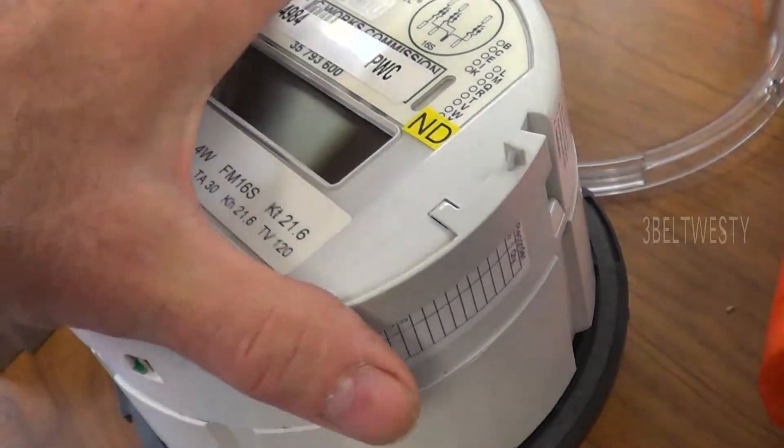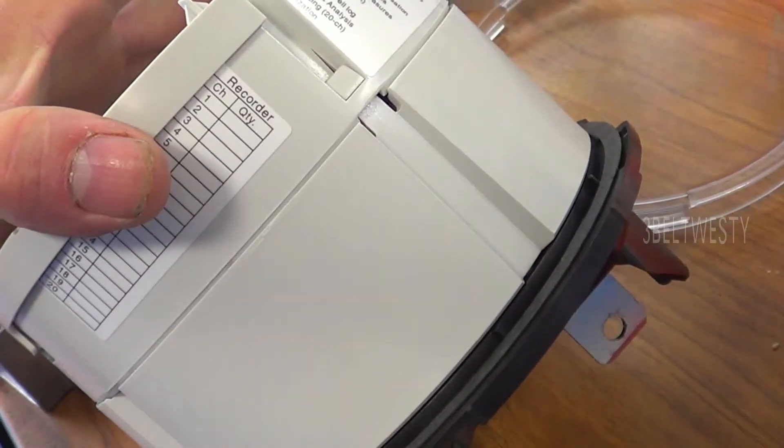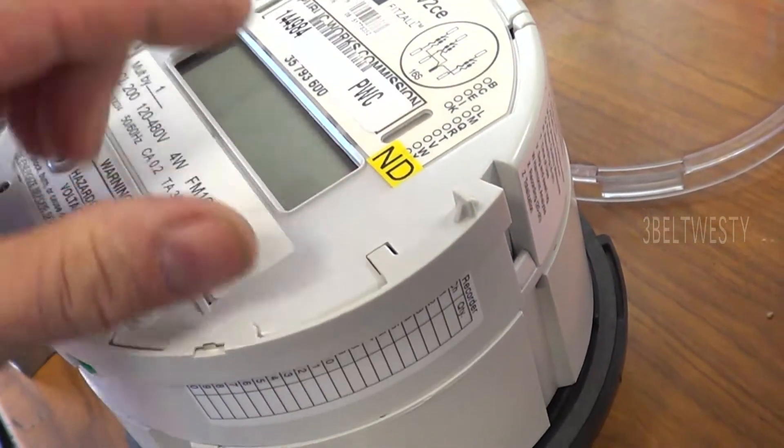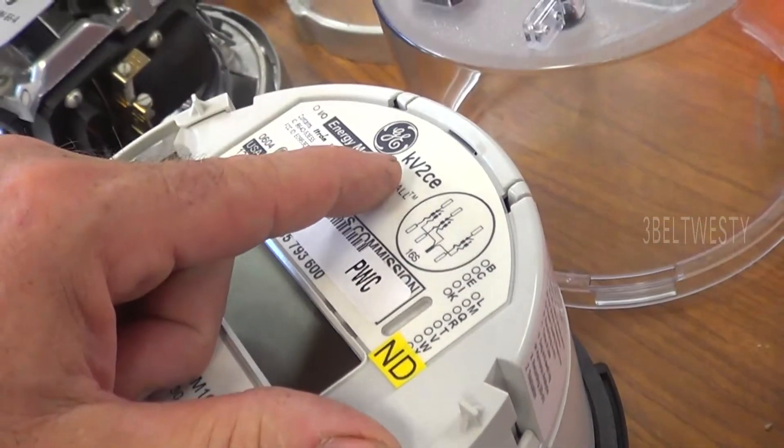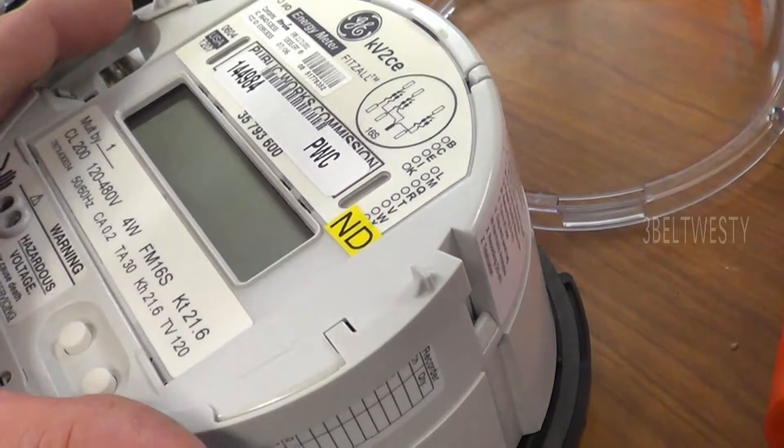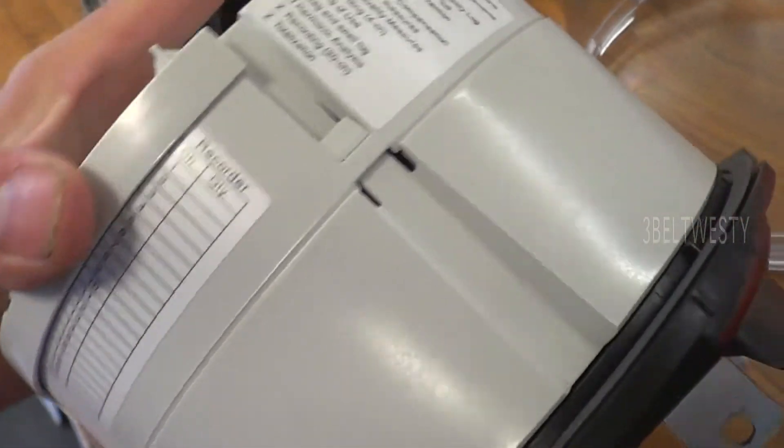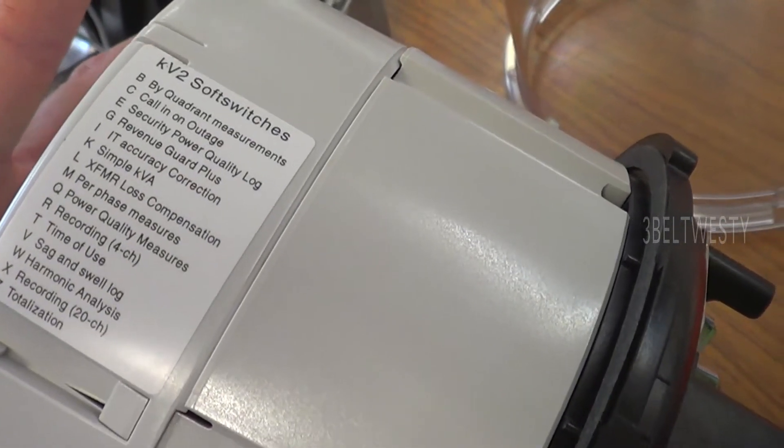So what it does this type of fits all meters by GE has been around for probably want to say 10 to 15 years. There's all different variants on these things. There's a KV I think a KV2, a C, a C plus and then you've got recorder settings on here. This is the soft switches.